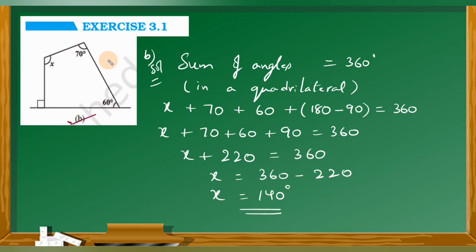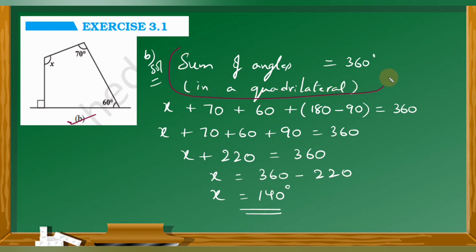In this figure also we have to find the value of x. This is also a quadrilateral. In a quadrilateral the sum of all interior angles is 360 degrees. So all angles added together must equal 360 degrees.